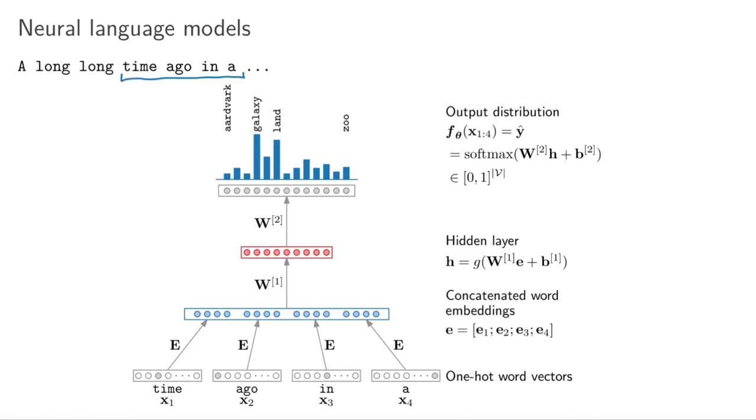Now the softmax isn't just over five classes like we had in the named entity recognition example, but the final output here is over all the different types of words, all the unique word classes that we have in our model. The first word might be aardvark and the last word might be zoo and all the other words are in between.